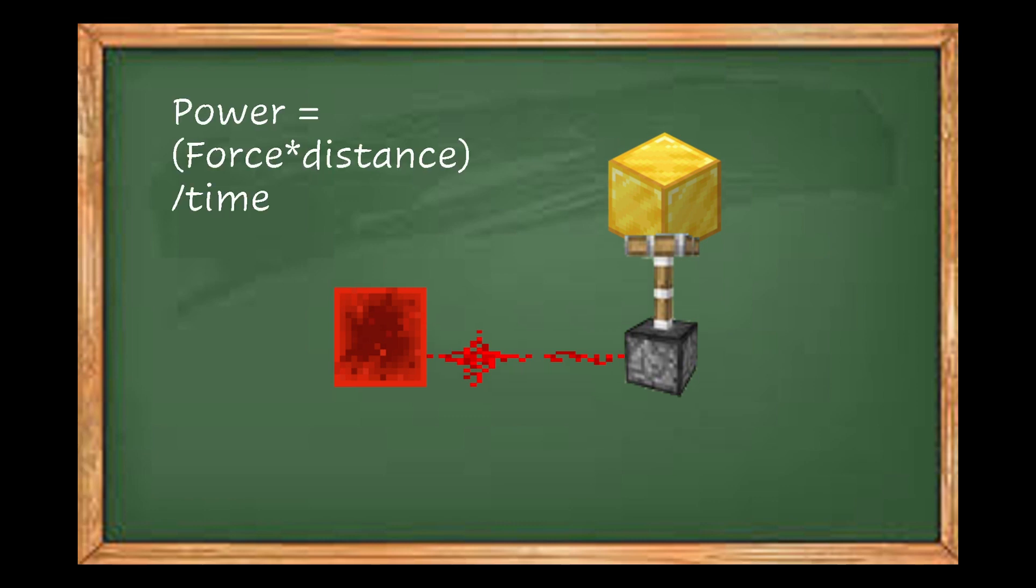Now we need the power output in watts. This is found by taking the force supplied downward by the gold block times the distance it travels divided by the time it takes for it to do it.